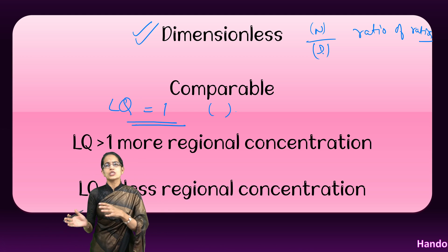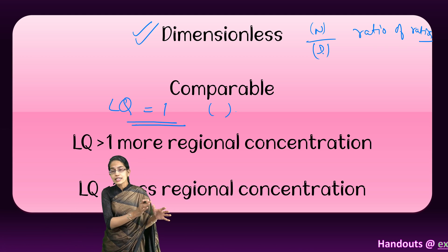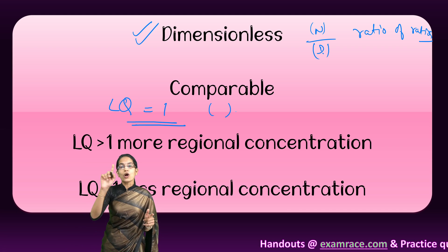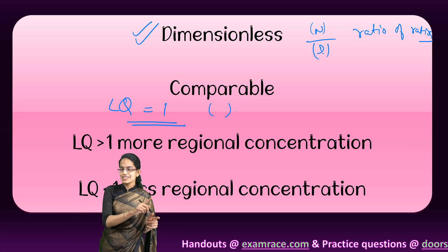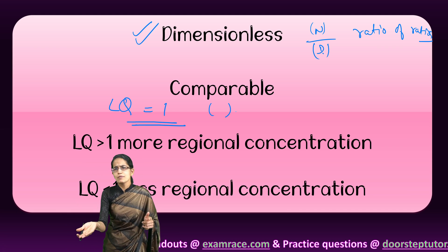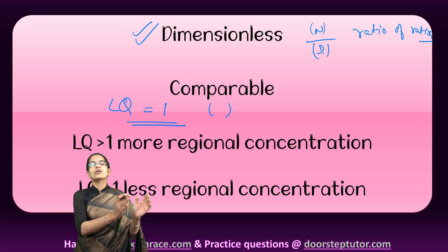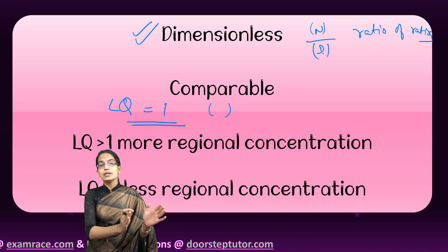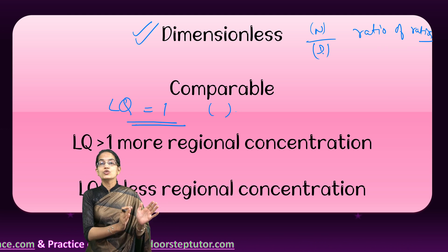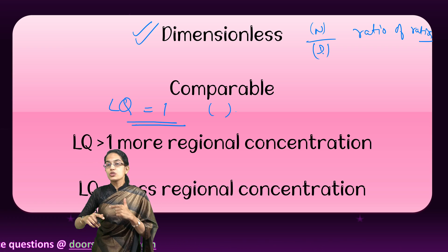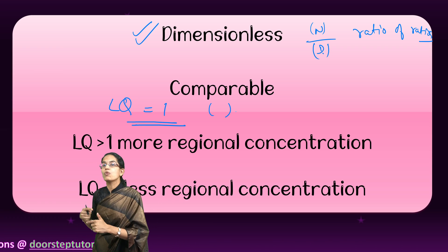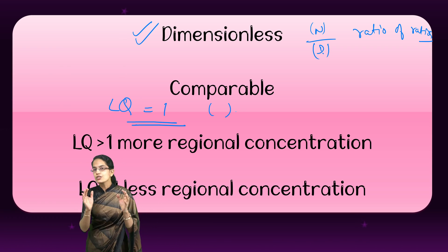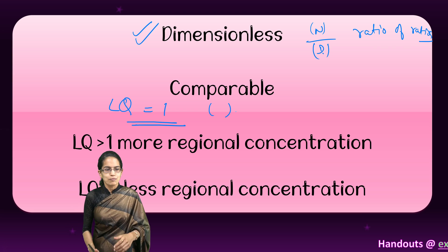For example, if I need to start an agricultural allied activity, I would prefer district A over others. The simple reason is there is more concentration of agricultural laborers there, so labor costs would be significantly reduced. This is how we apply measures of concentration in research.